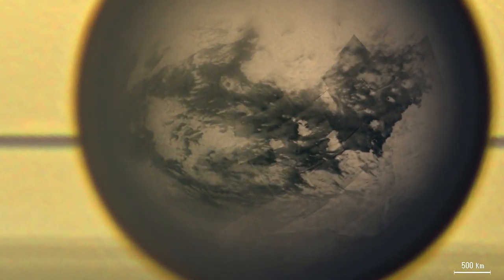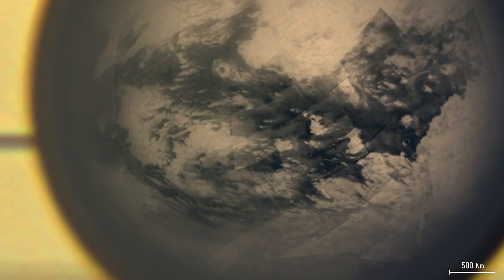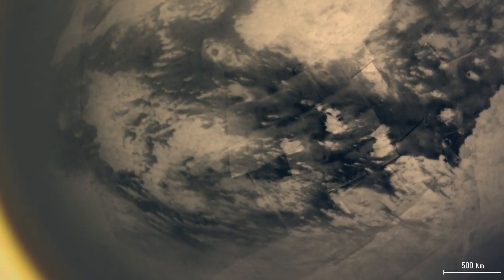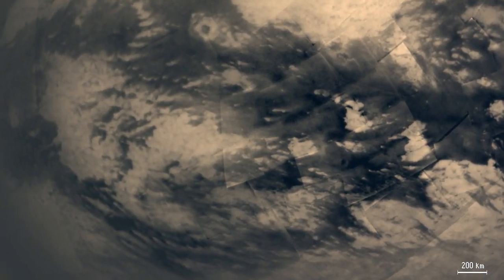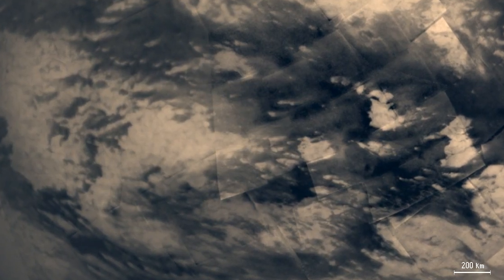Features on Titan's surface appear. The dark regions along Titan's equator are mostly dune fields. The brighter regions are highlands a few hundred meters high.